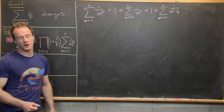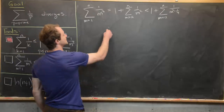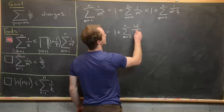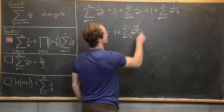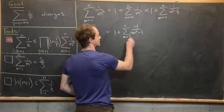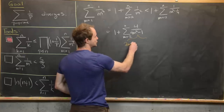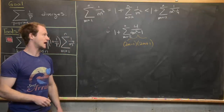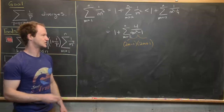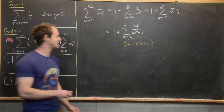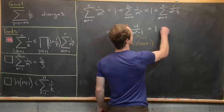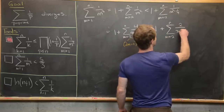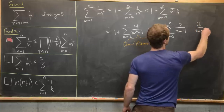Multiplying numerator and denominator by 4 gives 1 plus the sum m from 2 to n of 4/(4m² − 1). Now 4m² − 1 factors as (2m − 1)(2m + 1), a difference of squares, so we can apply partial fractions. The decomposition gives 4/(4m² − 1) = 2/(2m − 1) − 2/(2m + 1), so we have 1 plus the sum m from 2 to n of [2/(2m−1) − 2/(2m+1)].